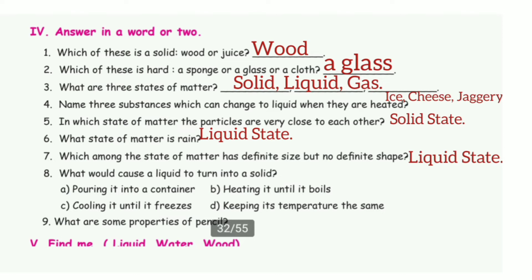3. What are the three states of matter? The answer is solid, liquid, and gas. 4. Name three substances which can change to liquid when they are heated. The answer is ice, cheese, and jaggery.